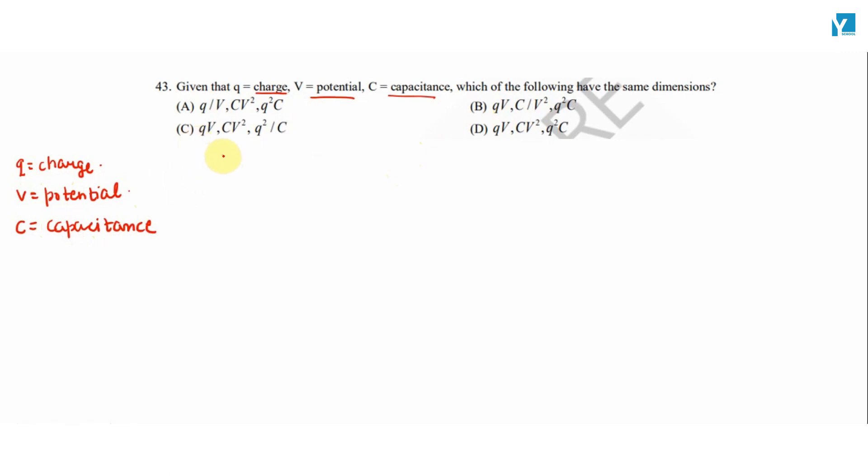We are given with quantities Q by V and CV square and Q square C. We know from the relation Q is equal to CV. So Q by V toh humara capacitance hota hai. So we know that this quantity toh humari capacitance hai.